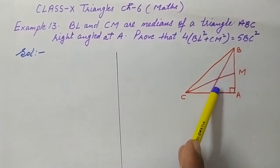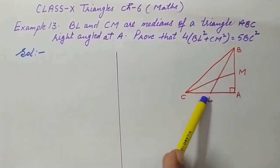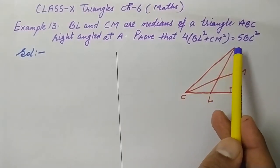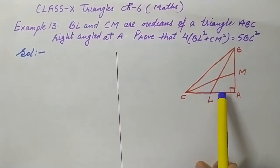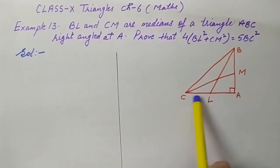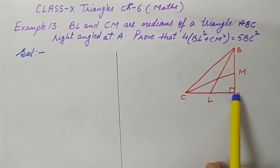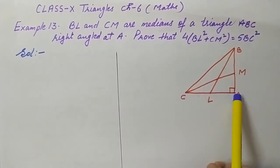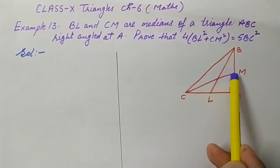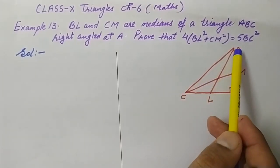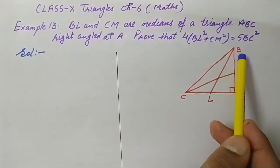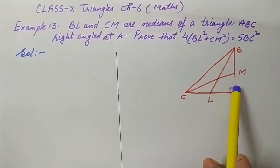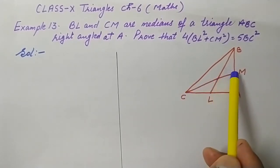BL is a median on AC. A median is a line segment joining the vertex to the midpoint of the opposite side. So L is the midpoint of AC, meaning CL = AL = half of AC. CM is also a median, so AM = MB = half of AB.